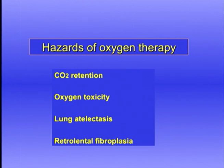The final hazard is retrolental fibroplasia, which occurs in infants treated for infant respiratory distress syndrome. If the arterial PO2 is sufficiently high, they can develop fibrosis behind the lens of the eye. This is now well recognized and clinicians are careful to keep the arterial PO2 below the level that would cause it.